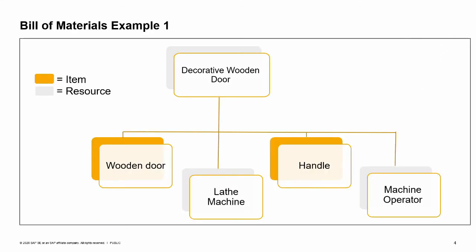Let us understand the Bill of Materials concept using the following example. To manufacture an engraved wooden door, we need two items: a plain wooden door and a handle. In addition, we need to engrave a decoration pattern. To do this, we need two resources: a lathe machine and a machine operator employee. These items and resources are combined in the decorative wooden door Bill of Materials.